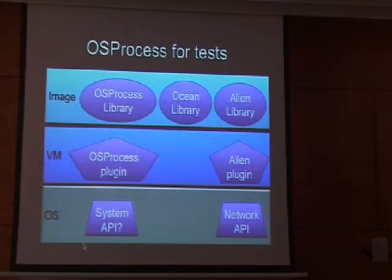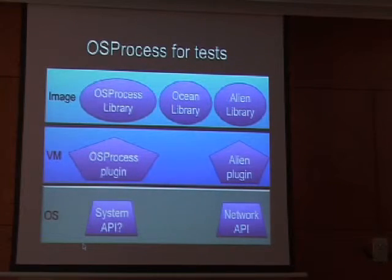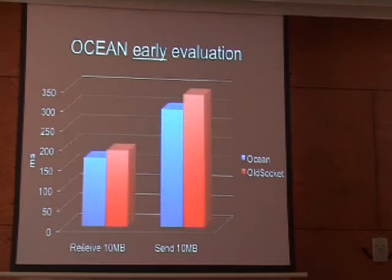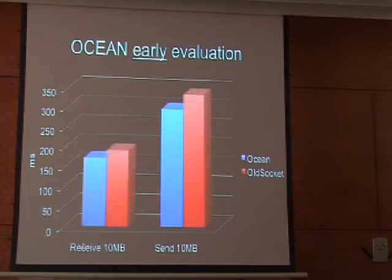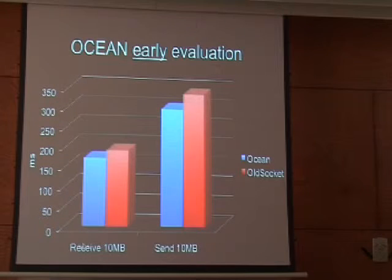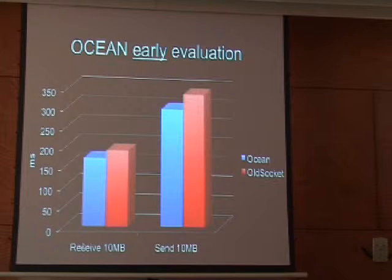Although we had a hard time doing all the tests, we succeeded. We are continuing to advance, and yesterday by midnight we really had send and receive working, even for large amounts of data. We could compare the performance of Ocean TCP sockets compared to existing sockets. Sending quite large amounts of data — 10 megabytes — both for sending and for receiving, Ocean was about 10% better than the existing implementation.